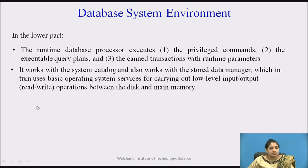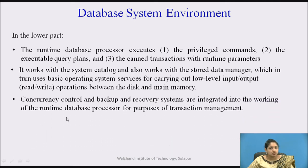In the lower part, the runtime processor executes privileged commands from DBA users, executable query plans, and canned transactions from parametric users with runtime parameters. It works with the system catalog and the stored data manager, which in turn uses basic operating system services for low-level input/output — read and write operations — between disk and main memory. Concurrency control and backup recovery systems are integrated into the runtime processor for transaction management.